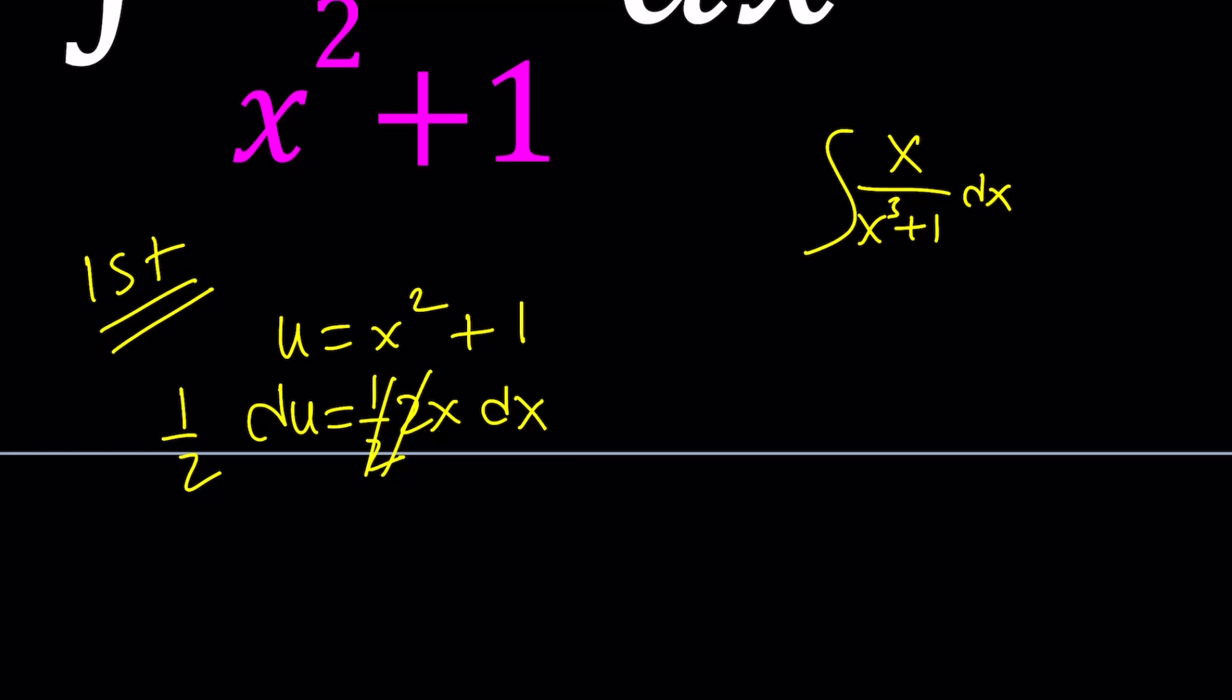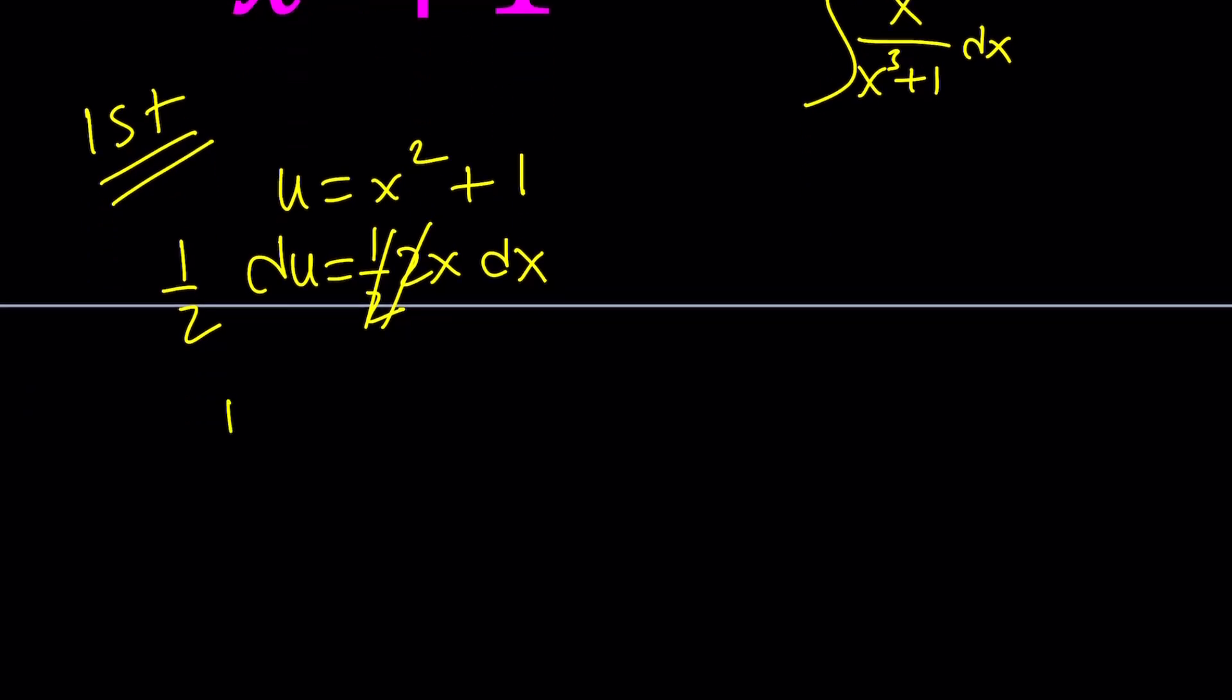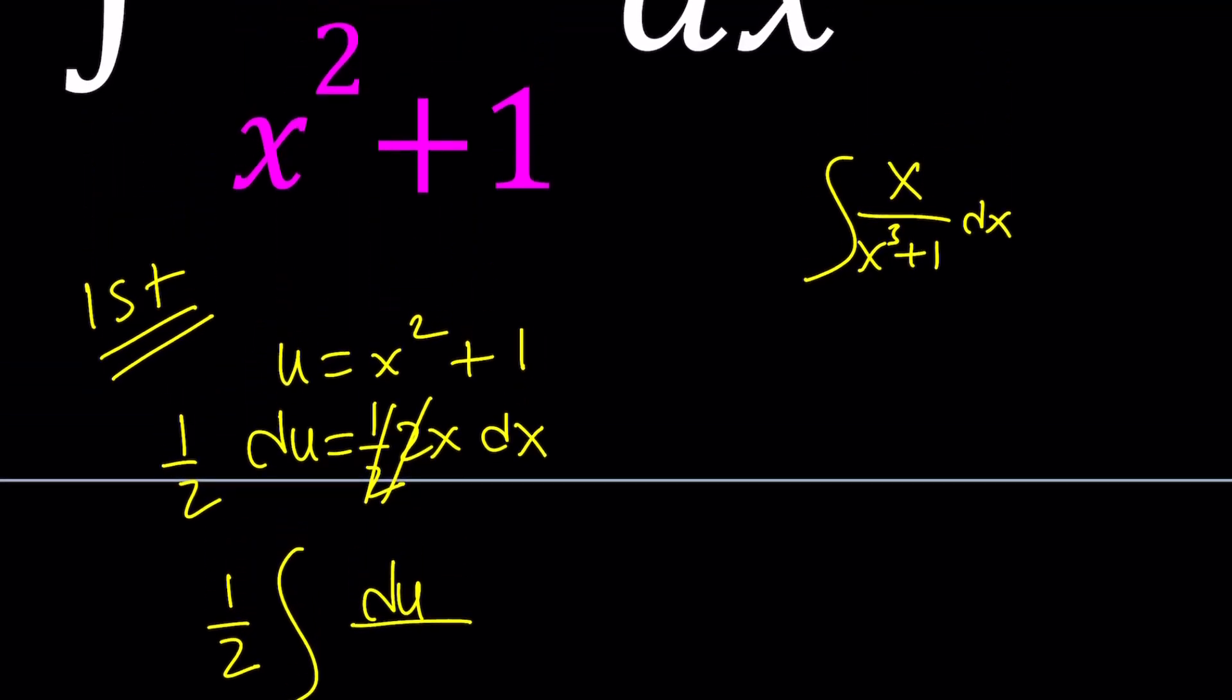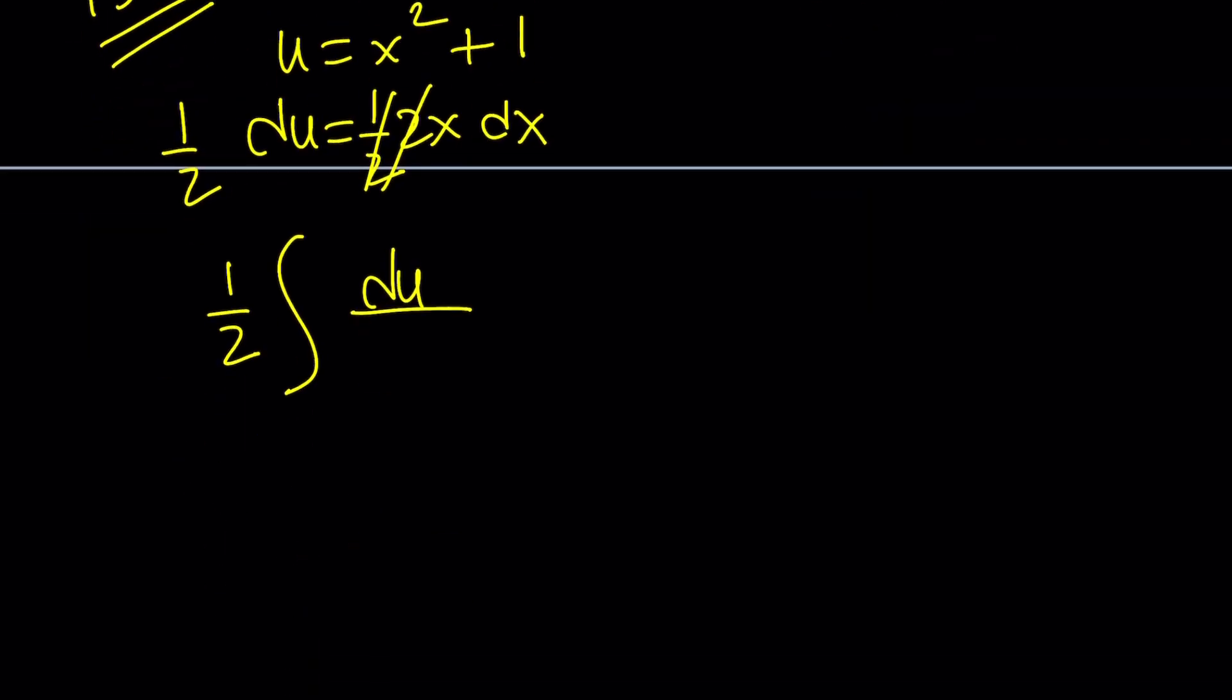Let's go ahead and substitute it. x dx will be replaced with 1 half of du. I'm going to go ahead and take out the 1 half because that's a constant. It can be taken out. Think about sigma. And we have u at the bottom, which is the denominator. Awesome. This is just 1 over u du. If you don't see what I'm talking about, write this as 1 over u du. Obviously, this is the same thing as 1 over x dx. What is the integral of 1 over u du?